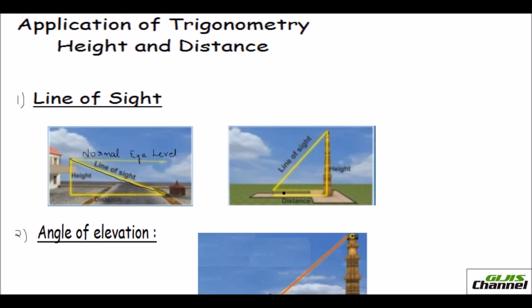In the second picture, a person is looking at the top of a tower. This straight horizontal line is his normal eye level, but when he looks up, his eye is tilted upwards. The line from his eye to the place where he is looking — that is the line of sight. So the horizontal eye level is the normal eye level; the line going from his eyes to where he is looking is the line of sight.